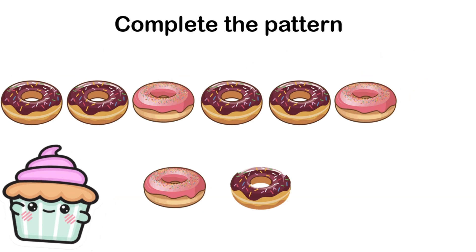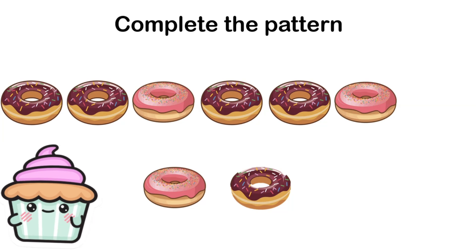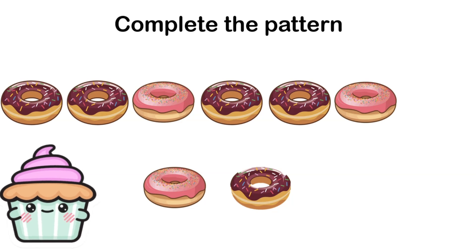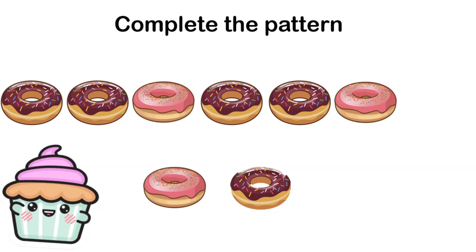Can you help me complete the next pattern? I have a chocolate donut, then another chocolate donut, then a strawberry donut — then a chocolate donut, another chocolate donut, then a strawberry donut. What comes next — a chocolate donut or a strawberry donut? You're right — it's a chocolate donut!